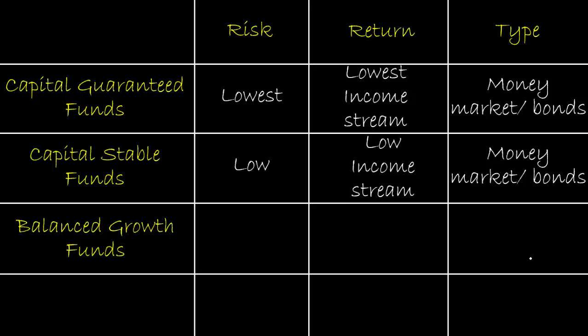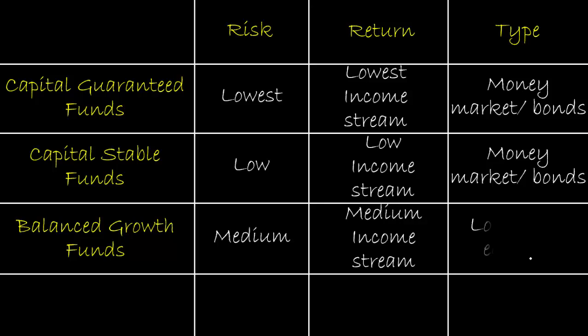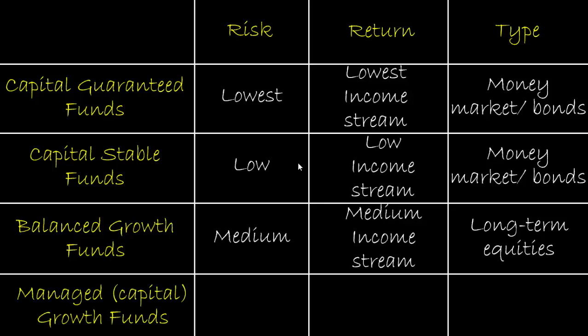The third category is the balanced growth fund. Here the risk is higher, so it is classified as a medium level of risk, and the return will be higher as well. They still focus on income stream but also invest in long-term equities — specifically dividend-paying equities, meaning shares that pay periodic dividends.